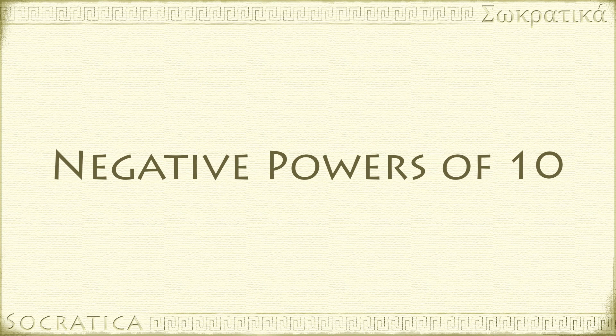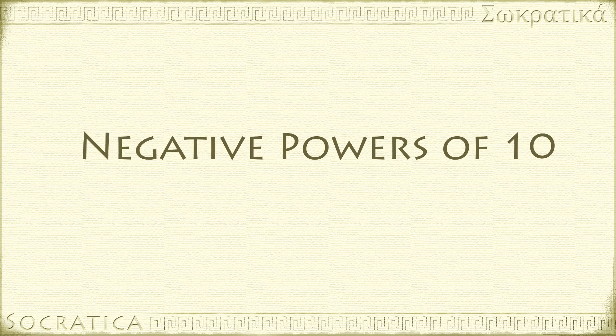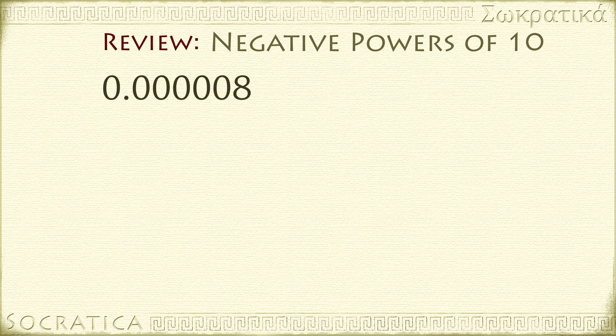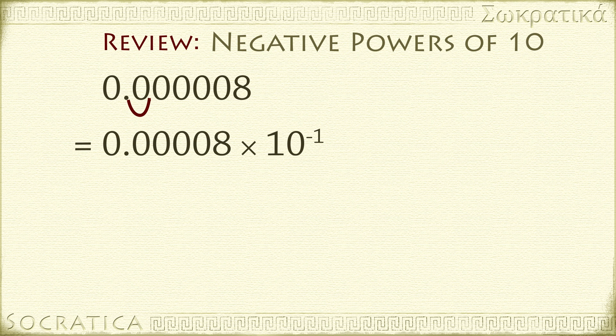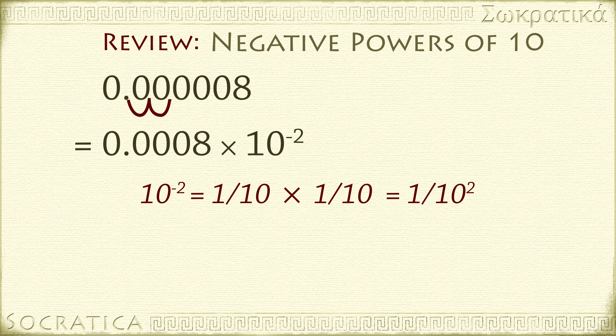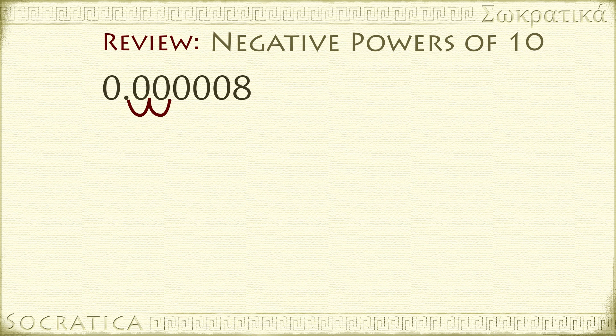Are you already familiar with negative powers of 10? Let's review this idea. When we move the decimal to the right, we need to undo that by dividing by 10. We can write that as 10 to the negative 1, which is the same as 1 over 10. If we move the decimal point twice, that means we need to divide by 10 twice. We can think of that as 1 over 10 times 1 over 10, which is the same as 1 over 10 squared, which is the same as 10 to the negative 2. Let's continue in this way until we get to 10 to the negative 6.